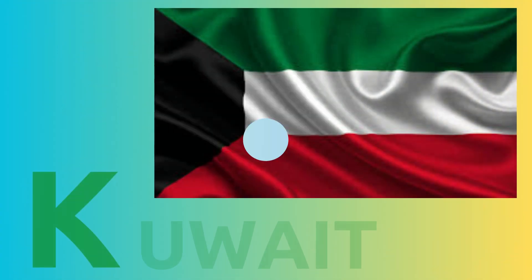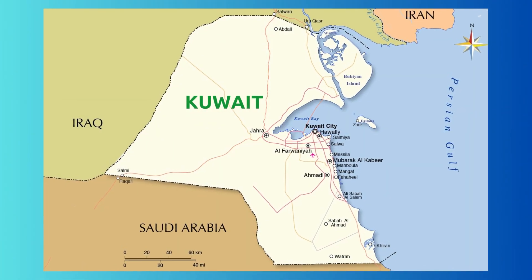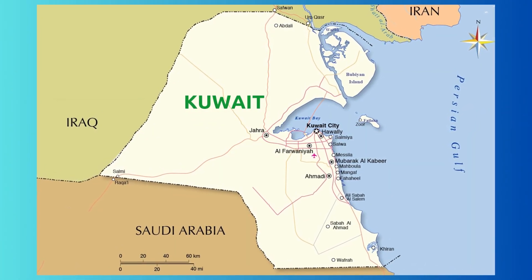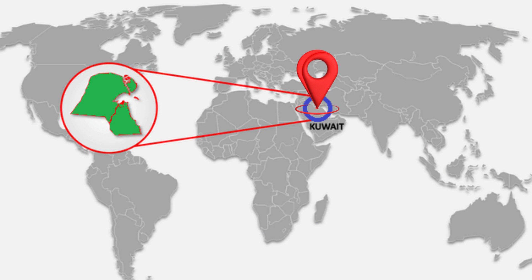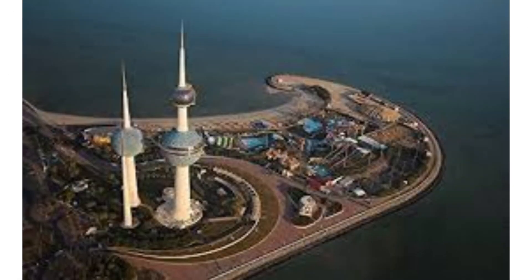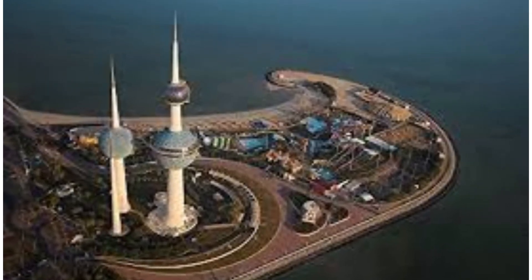K. K for Kuwait. Official name: Dawlat al-Kuwait. Kuwait has no UNESCO World Heritage Sites. Kuwait Towers is one of Kuwait's most famous landmarks.